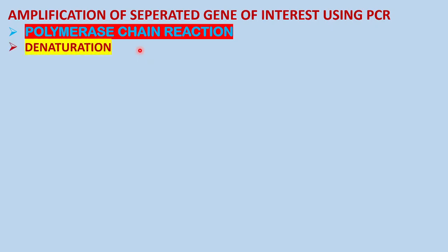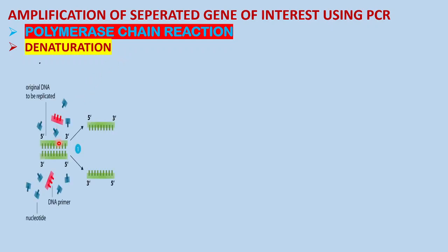Polymerase chain reaction is quite similar to DNA replication, but carried out artificially. The first step is denaturation — separating the DNA fragments. This green part represents the fragmented isolated gene of interest, the original DNA we want to make many copies of. High heat is applied, causing the hydrogen bonds to break, and the two complementary strands are separated out. This is denaturation, done by application of high heat.